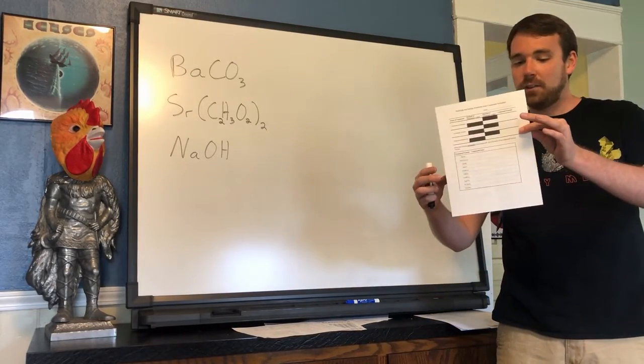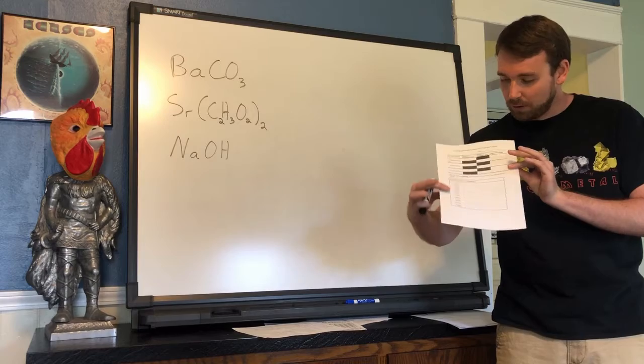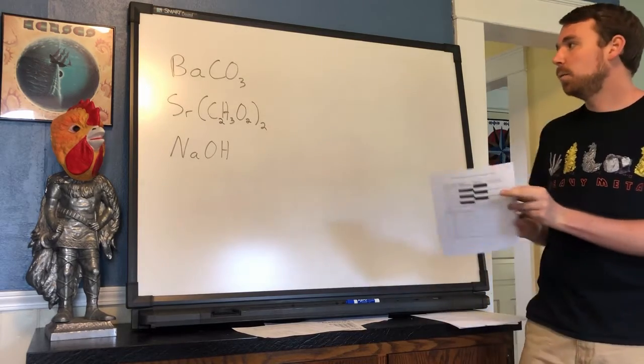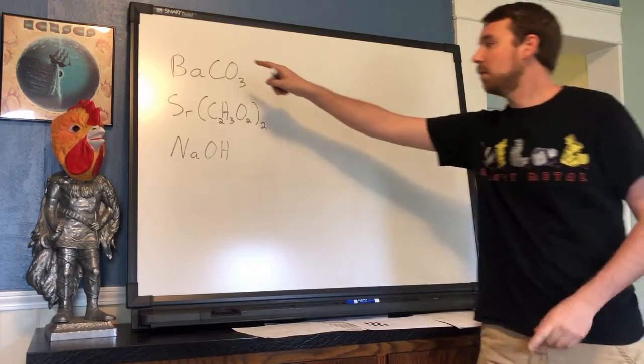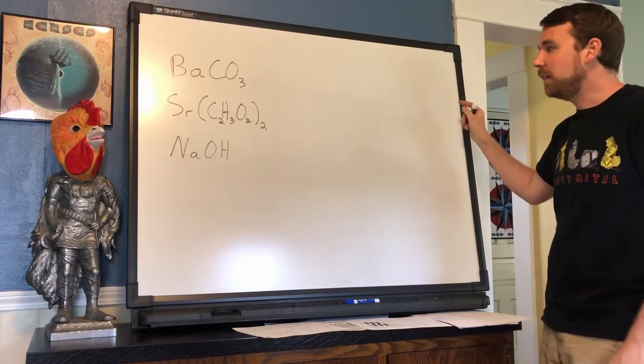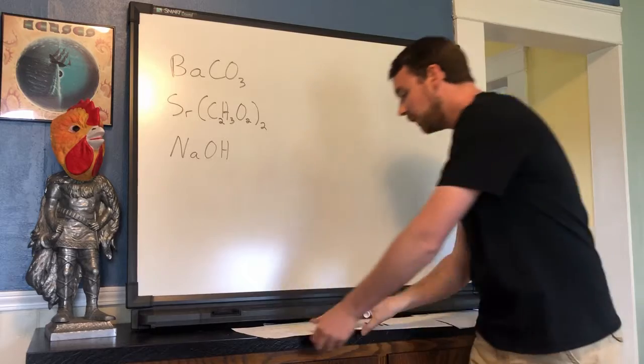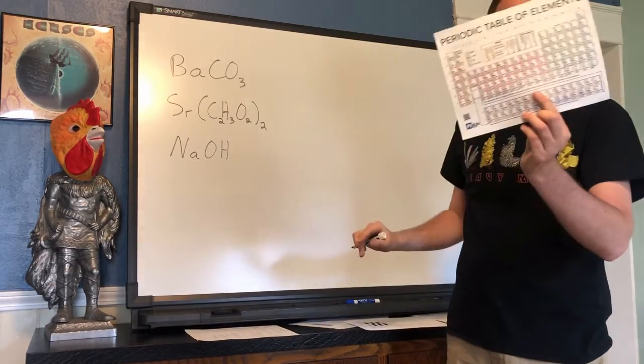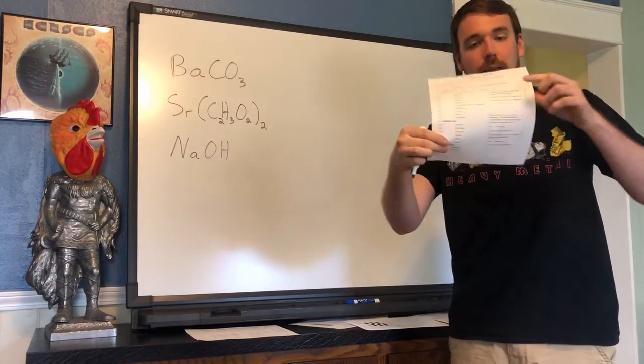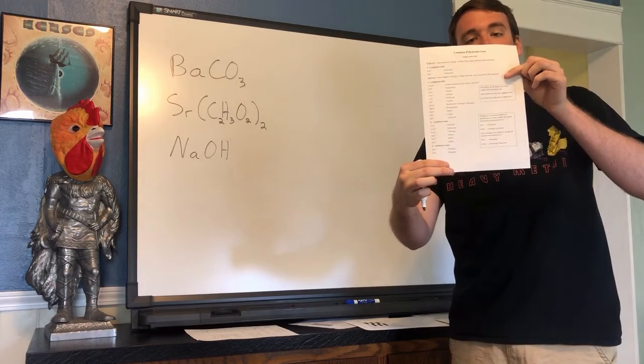We are now going to take a look at the bottom part of this sheet where we are given a chemical formula and we need to have a name for it. To do this you are going to want to have a periodic table and a polyatomic ion sheet handy.